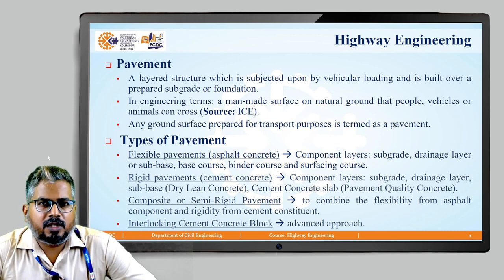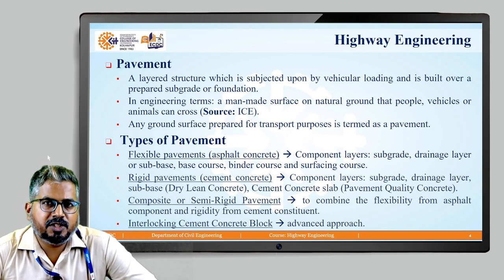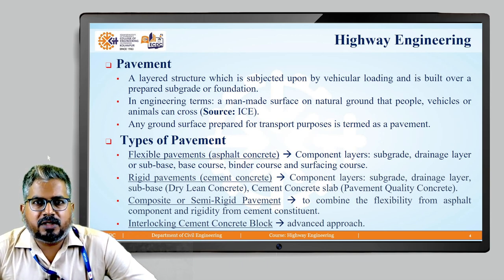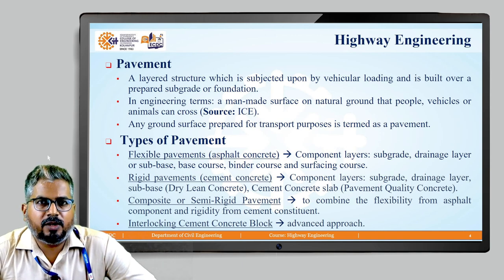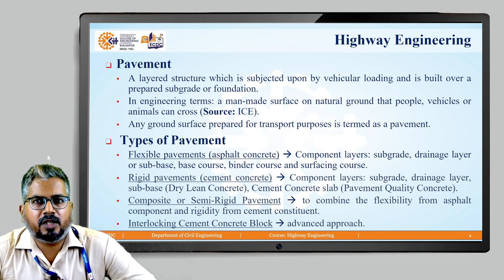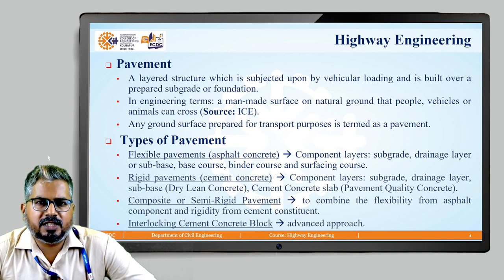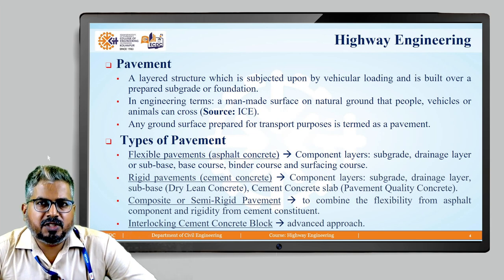There are four different types of pavement. We majorly look into two: flexible pavements and rigid pavements. The flexible pavement is also known as asphalt concrete pavement. Its component layers are the subgrade, drainage layer or sub base, base course, binder course, and surfacing course. The rigid pavement is also known as cement concrete pavement, with layers including the subgrade, drainage layer, sub base of dry lean concrete, and a cement concrete slab of pavement quality concrete.